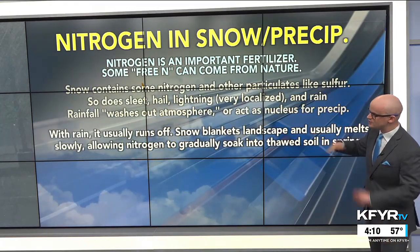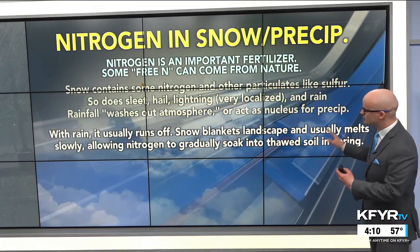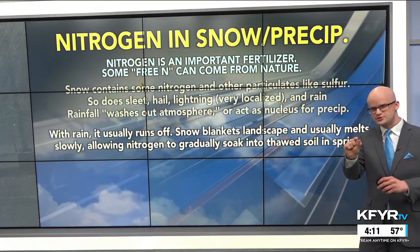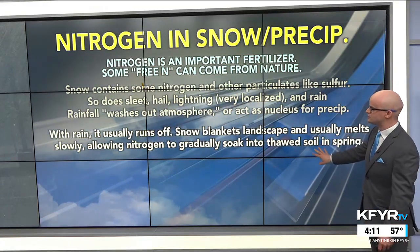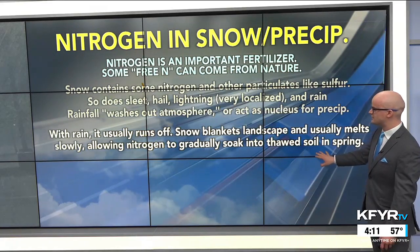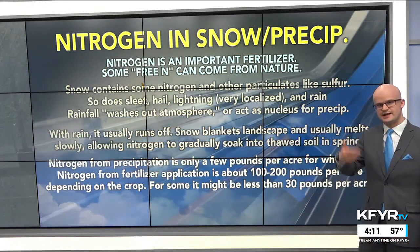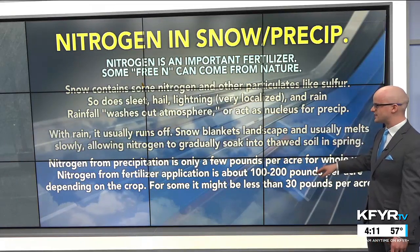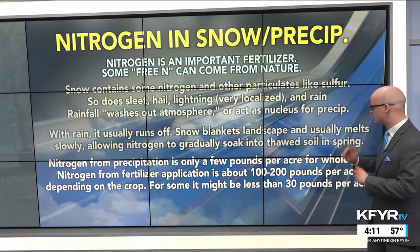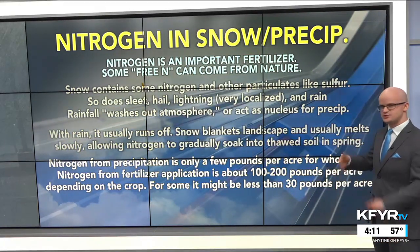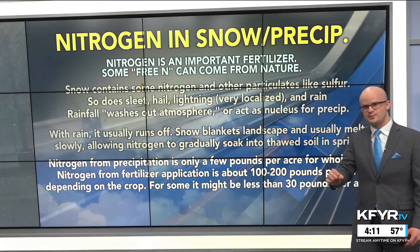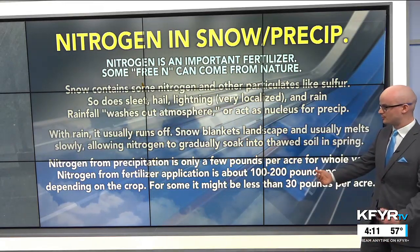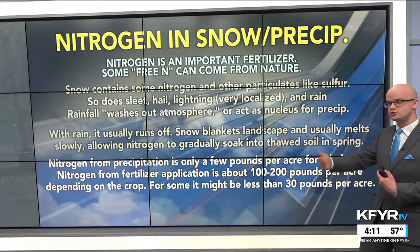With rain, it usually runs off when it hits the ground. With snow, it blankets the landscape and melts slowly, allowing those small amounts of nitrogen to gradually soak into the thawed soil in the spring, helping to enrich the soil just a little bit. Nitrogen from precipitation is only a few pounds per acre for the whole year — really just a small drop in the bucket.